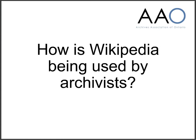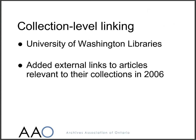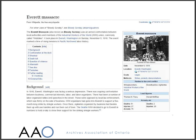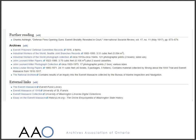Let's look at some examples of how archivists have been using Wikipedia to link to their online materials. In the case of the University of Washington Libraries, links were made to their collection-level descriptions from articles which had some relevance to those collections. For example, here is the Wikipedia article on the Everett Massacre, which happened in November 1916. At the bottom of the article is a Further Reading section which has a series of links to collections which relate to the massacre. These are all held at the University of Washington Libraries, while the last one is at the National Archives and was added at a later date.